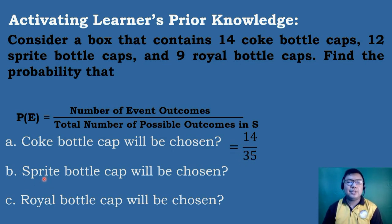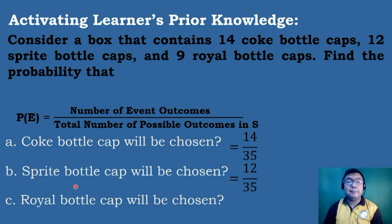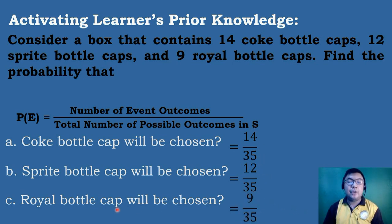Now, to get the probability of getting a Sprite bottle cup, we use the same formula. The probability of choosing a Sprite bottle cup is equal to 12 over 35. The probability of choosing a Royal bottle cup uses a number of event outcomes equal to 9, and the total number of possible outcomes is 35. Therefore, the probability of choosing a Royal bottle cup is equal to 9 over 35.